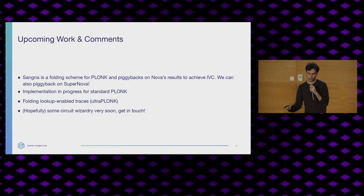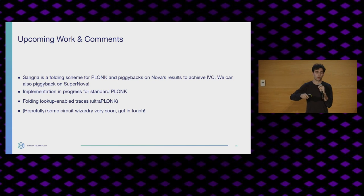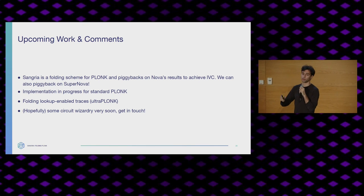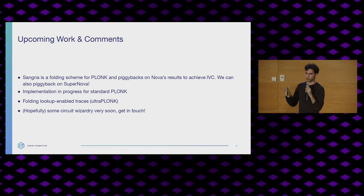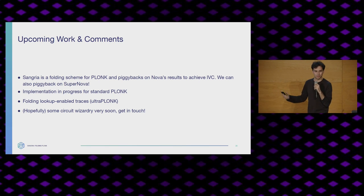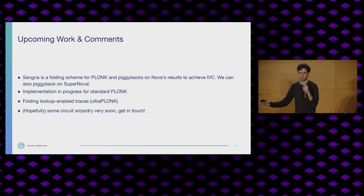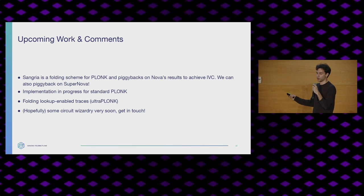I'll finish by mentioning some upcoming work. Sangria is a folding scheme for Plonk-ish circuits. Because we now have a folding scheme, we can piggyback off all of Nova's results — we can do IVC from folding schemes. We can also piggyback off SuperNova, which allows IVC with different functions at every step. We're currently working on an implementation for standard Plonk specifically, just to show it works and have a running example. We're also working on folding lookup-enabled traces — we're looking to fold Ultra-Plonk, and we have something that pretty much works. And hopefully some circuit wizardry to come soon to have cheaper overhead and super cheap IVC.